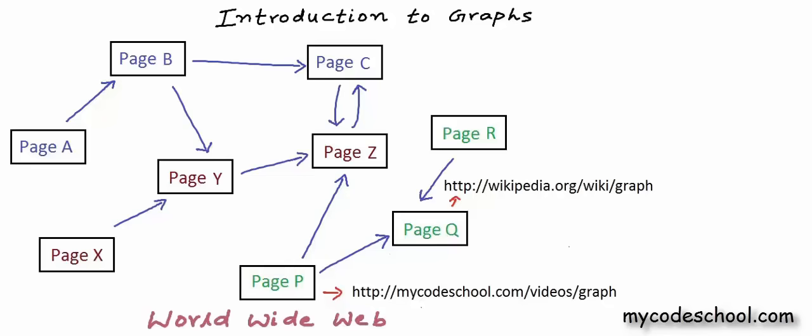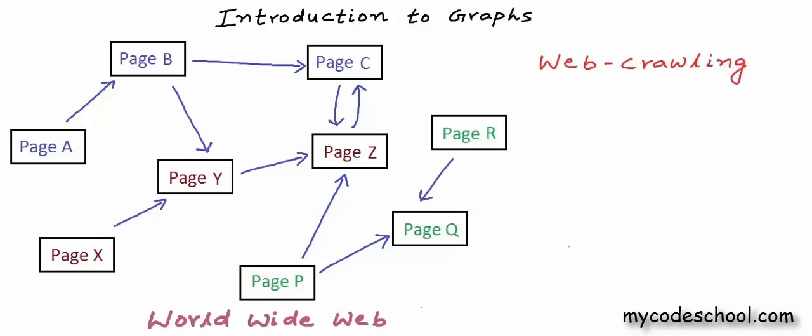Once we are able to represent the web as a directed graph, we can apply standard graph theory algorithms to solve problems and perform tasks. One of the tasks that search engines like Google perform very regularly is web crawling. Search engines use a program called a web crawler that systematically browses the worldwide web to collect and store data about web pages. Search engines then use this data to provide quick and accurate results against search queries. Web crawling is basically graph traversal — the act of visiting all nodes in a graph — and there are standard algorithms for graph traversal that we will study in later lessons.